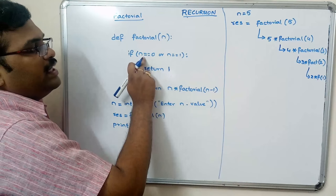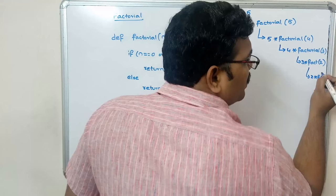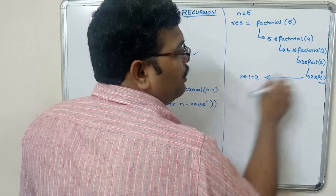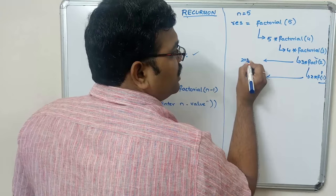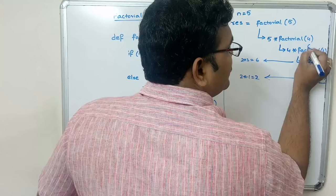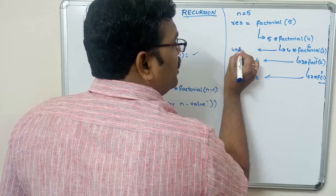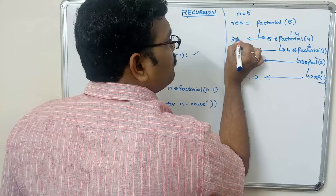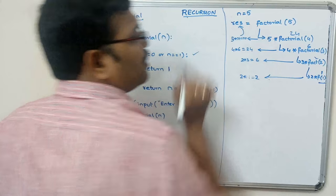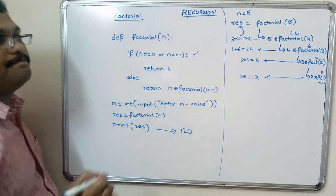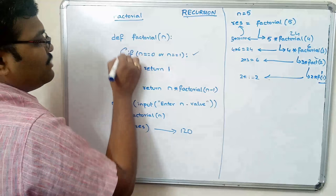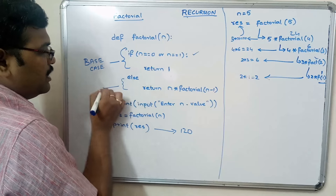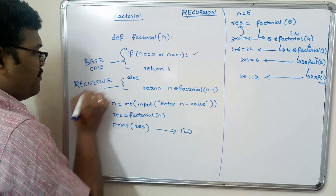Factorial(1): n equals 1, which is true, so it returns 1. This function returns 1, so 2 into 1 gives 2, which is returned. Then 2 into 3 gives 6, which is returned. Then 6 into 4 gives 24, which is returned. Then 24 into 5 gives 120, so result gets 120. Here the if block is the base case and the else is the recursive case.